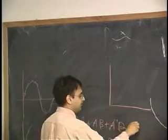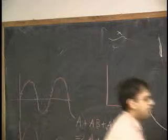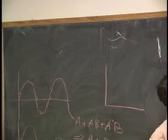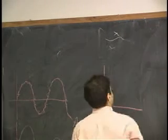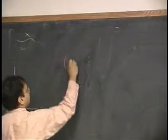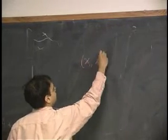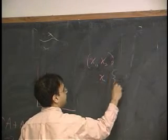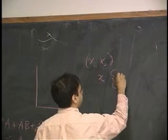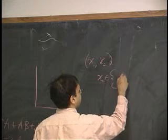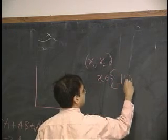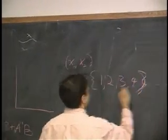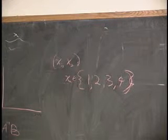I have the sample space, and if I have a set of events x1 comma x2, where x sub n is a member of 1 comma 2 comma 3 comma 4, let's say. So let's say that it's a tetrahedral die or something like that.